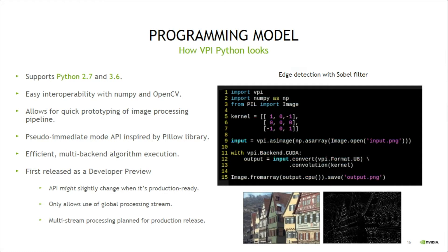VPI supports both Python 2.7 and 3.6, and has easy interoperability with NumPy and OpenCV. It is great for quick prototyping of image processing pipelines. Its API is inspired after the well-known Pillow image processing library, with added extensions to allow execution in different computing backends.